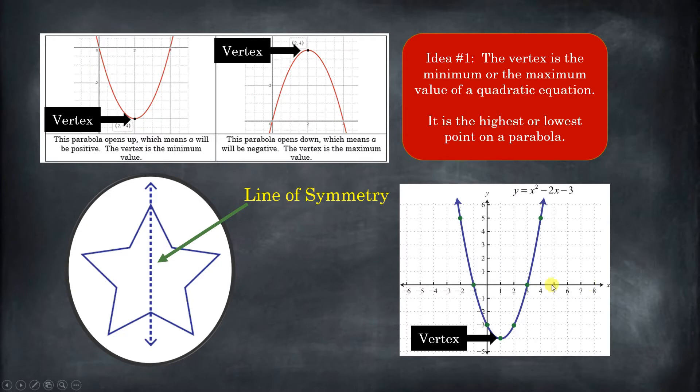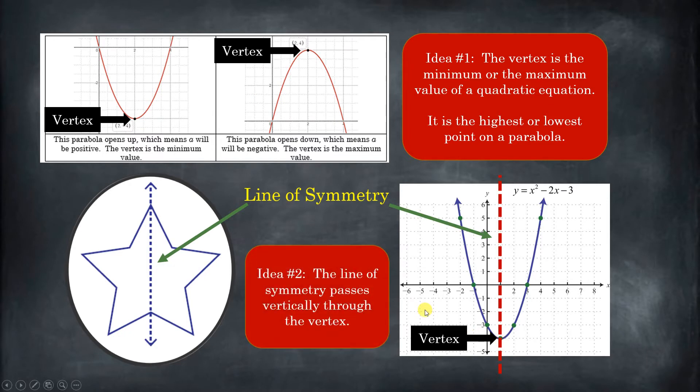So here, the vertex coordinate is 1, comma, negative 4. And there's a line, x equals 1, that passes vertically through the vertex. And everything on the left and everything on the right are equal distance. They're mirrors, they're reflections of one another. And so this line of symmetry cuts the parabola in half, and it goes vertically right through the vertex. So that is a key piece of information.